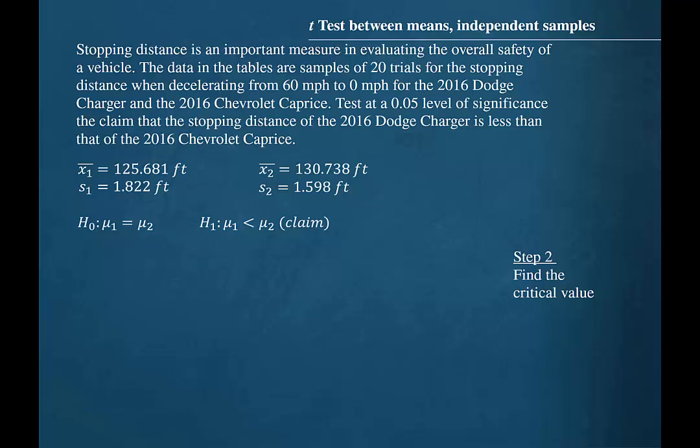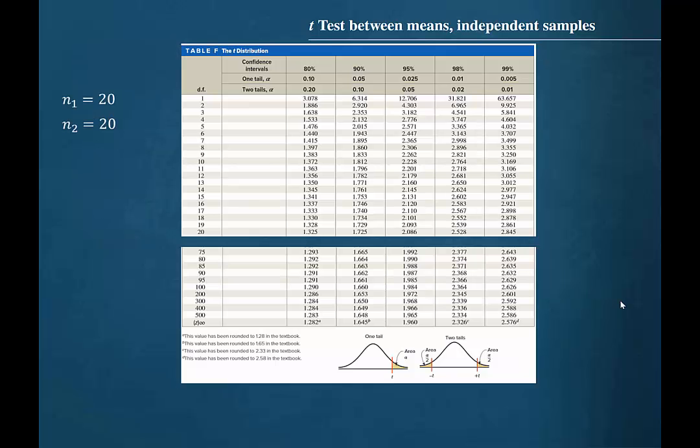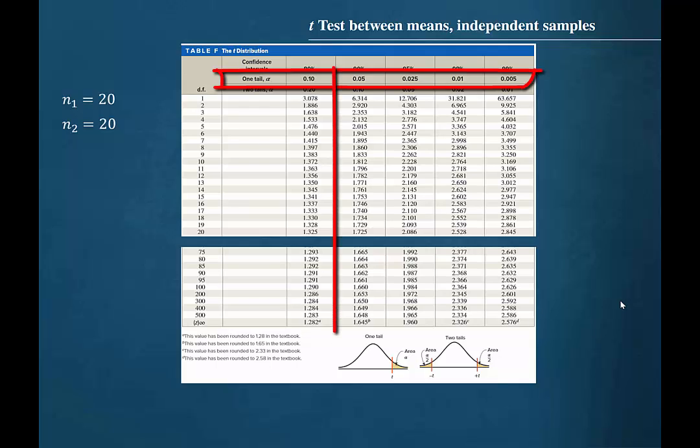Step 2 is to find the critical values. Since the population standard deviations are unknown, we will use the t-distribution for our critical values. Note that the second line of the t-distribution table should be used for one-tailed t-tests. We should travel across to the column that is headed 0.05 since this is the specified significance level for this problem.